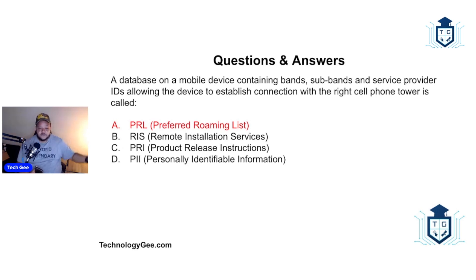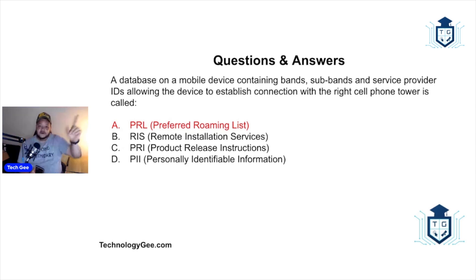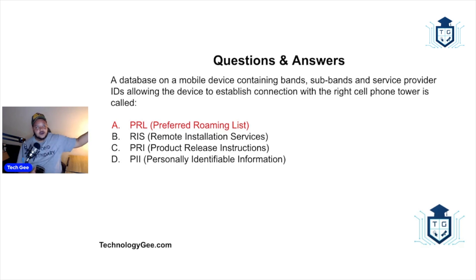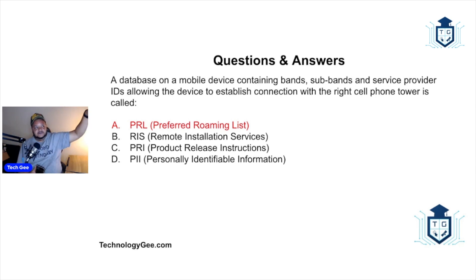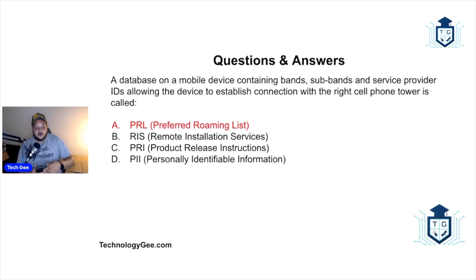Your phone constantly talks to cell towers and shares its information so it can be found. When someone calls you, the call gets routed through the systems, finds the closest tower, that tower establishes a connection with your phone, and sends the call through. That's how it works — it's called the Preferred Roaming List.